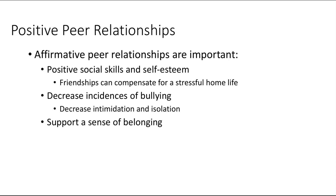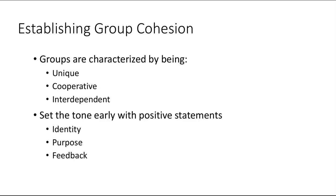If we have positive peer relationships, there might be decreased intimidation and isolation. We see decreased incidences of bullying, and we generally support students to get a sense of belonging and make connections with others. When thinking about cohesion in the group — how do we create that sense of belonging or culture in our classroom — we know that groups are generally unique instances, cooperative existences, and can operate interdependently. It's important to set the tone early by identifying: what's the identity, what's the purpose, what are the feedback structures, who's in the group, and what's the role of members?